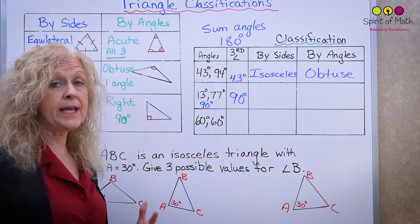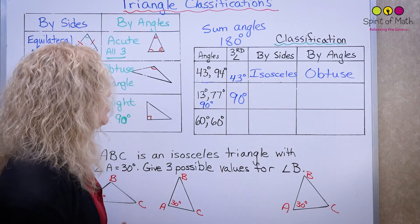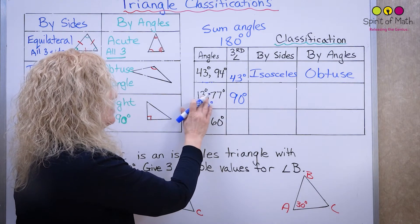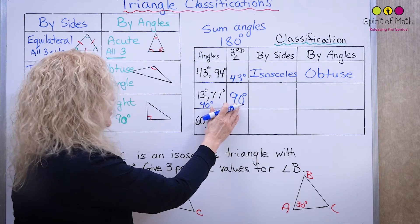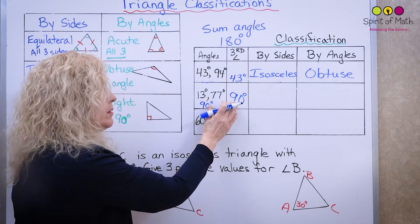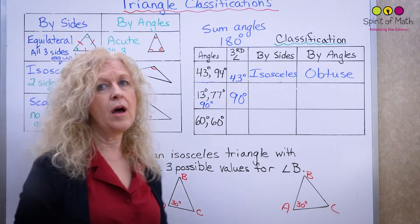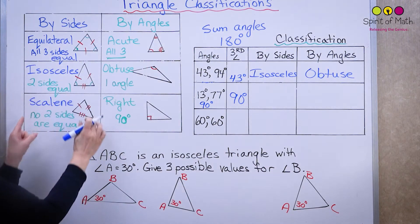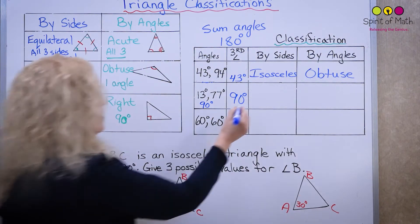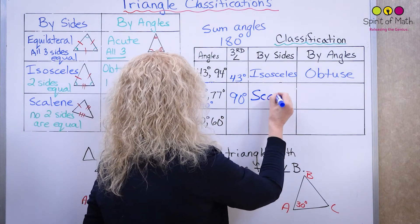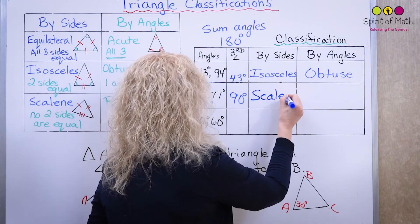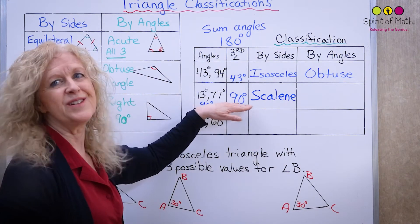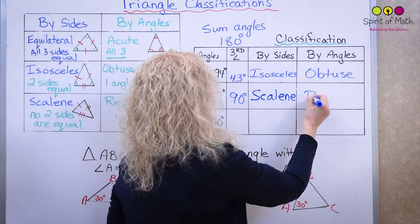And again, we go through the types. By sides: none of the angles are equal, so all the sides will be different — which means it's scalene. By angles: there's a right angle, so it's a right scalene triangle.